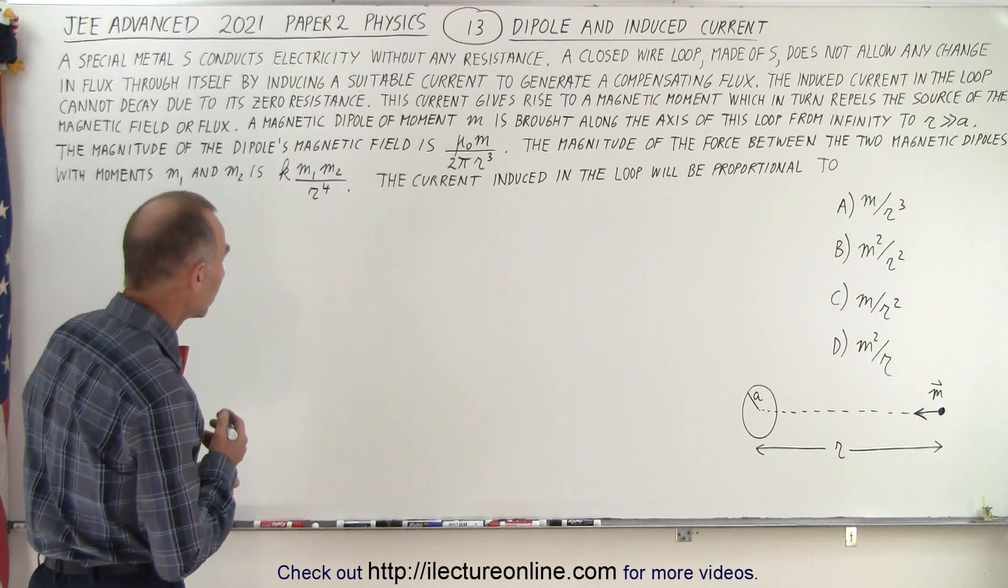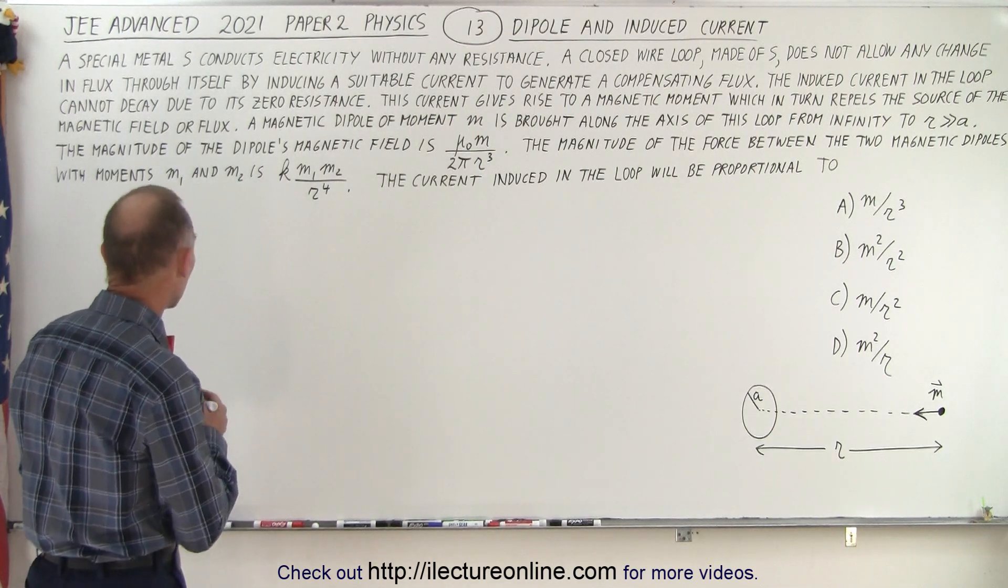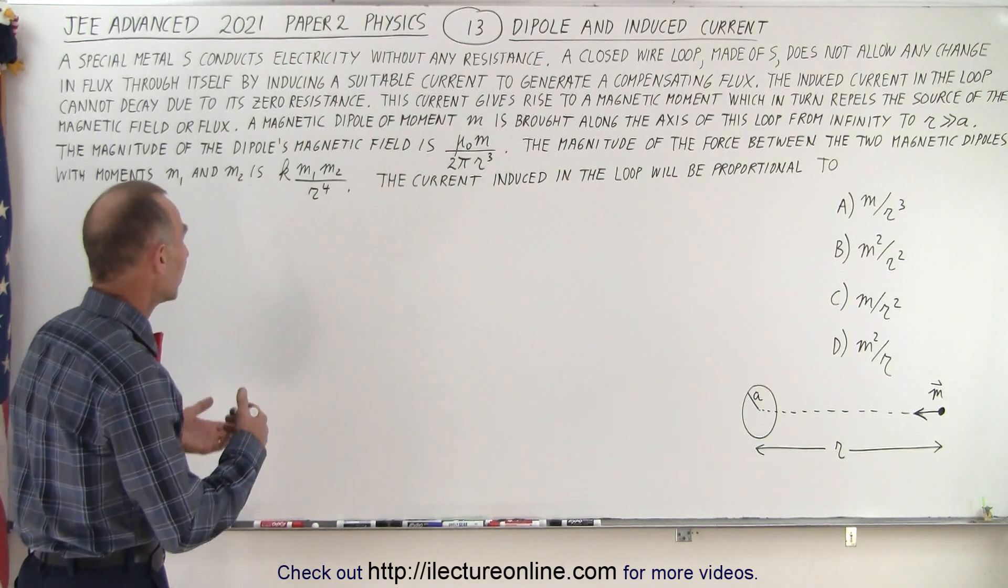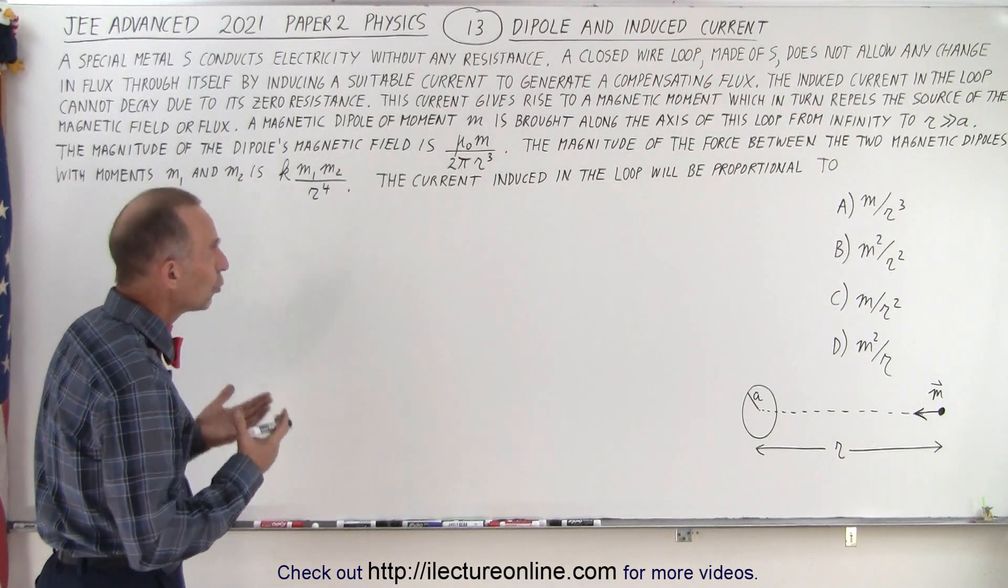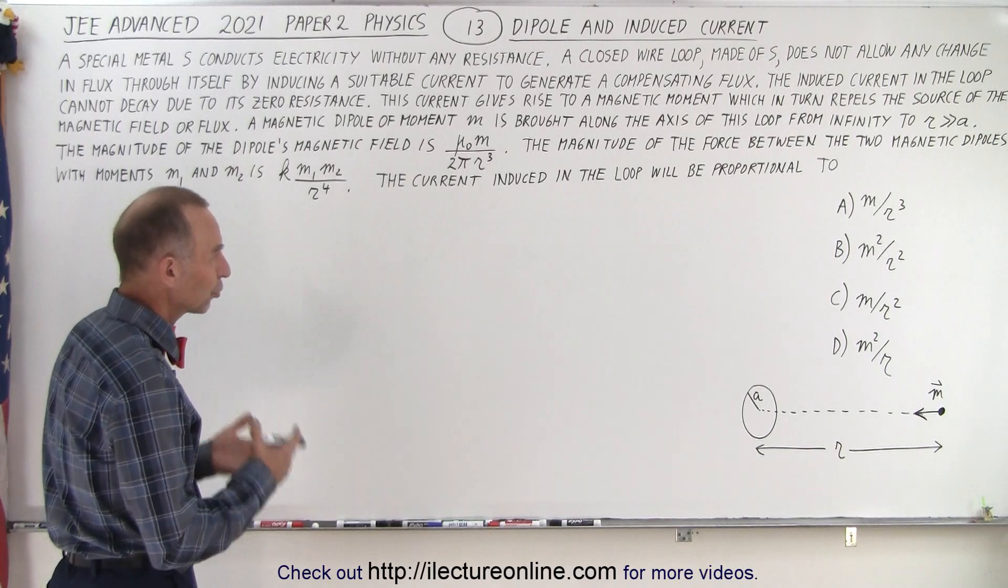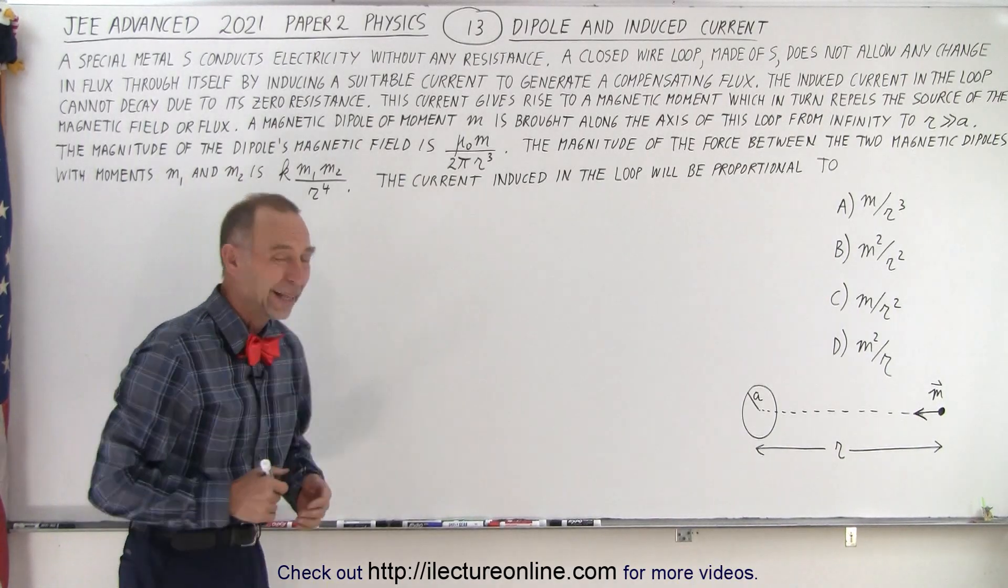The magnitude of the force between the two magnetic dipoles with moments M₁ and M₂ is KM₁M₂ divided by R to the fourth. And then the question is, the current induced in the loop will be proportional to, and they give you four possible answers.